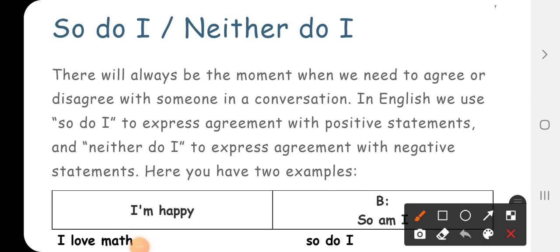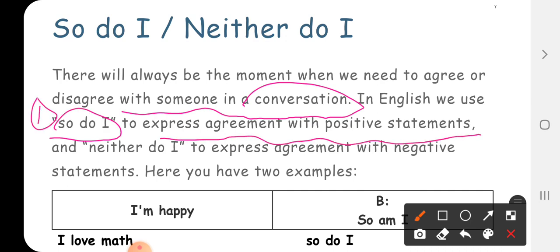Let's start agreement phrases. So we use agreement status so do I and neither do I. Okay? When we use the phrases, agreement phrases, we use it when we are talking with someone in a conversation. Now we use so do I number one when you express agreement with positive statement.